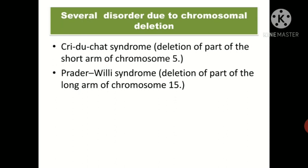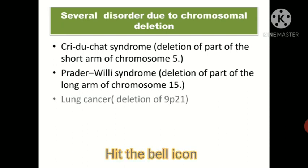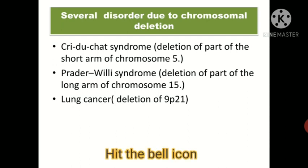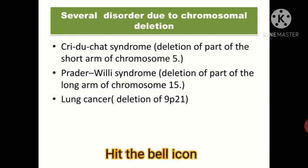The second deletion disorder is Prader-Willi syndrome, caused by deletion of part of the long arm of chromosome 15. Patients present with mental retardation, obesity, and other features. Another example is deletion of the 9p21 gene encoding p16, cyclin D, and CDKN2A, which leads to lung cancer.